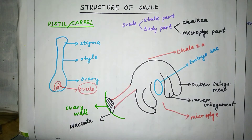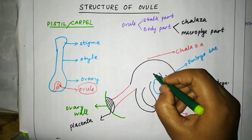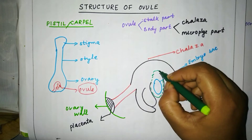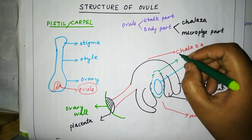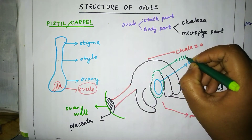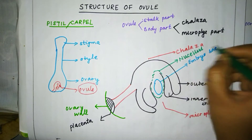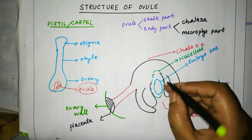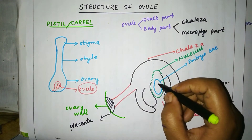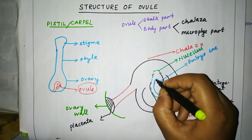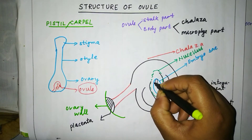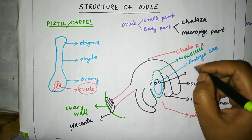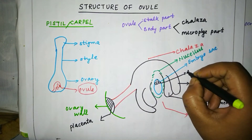The embryo sac is covered by nucellus cells — this is the nucellus. The embryo sac consists of antipodal cells, which are present towards the chalazal end. These three cells are the antipodal cells.